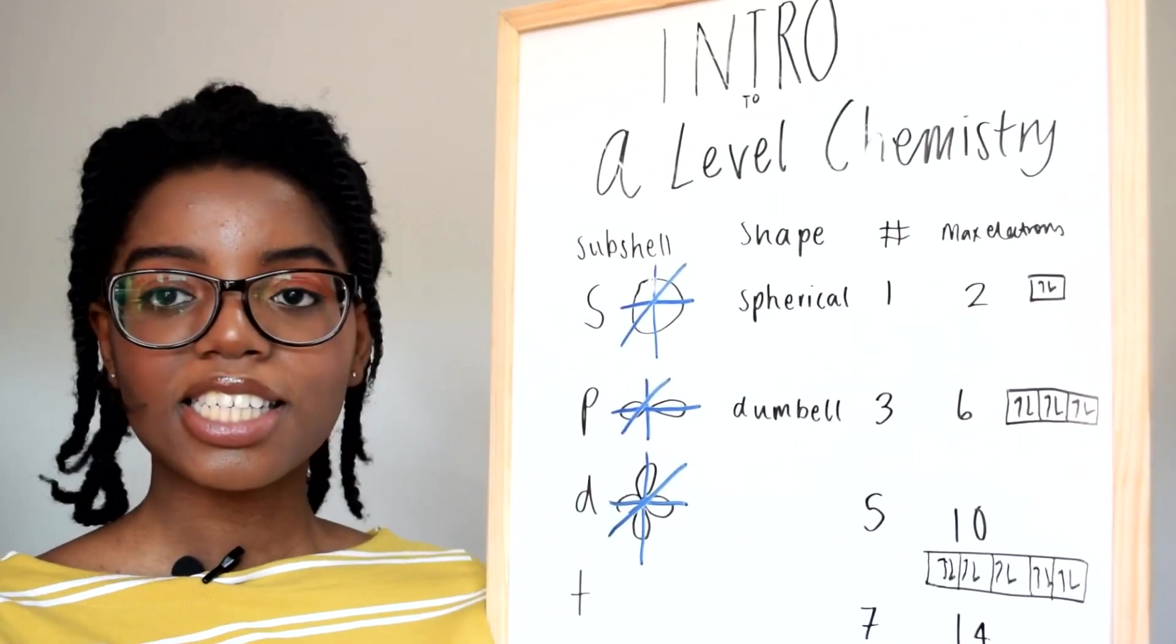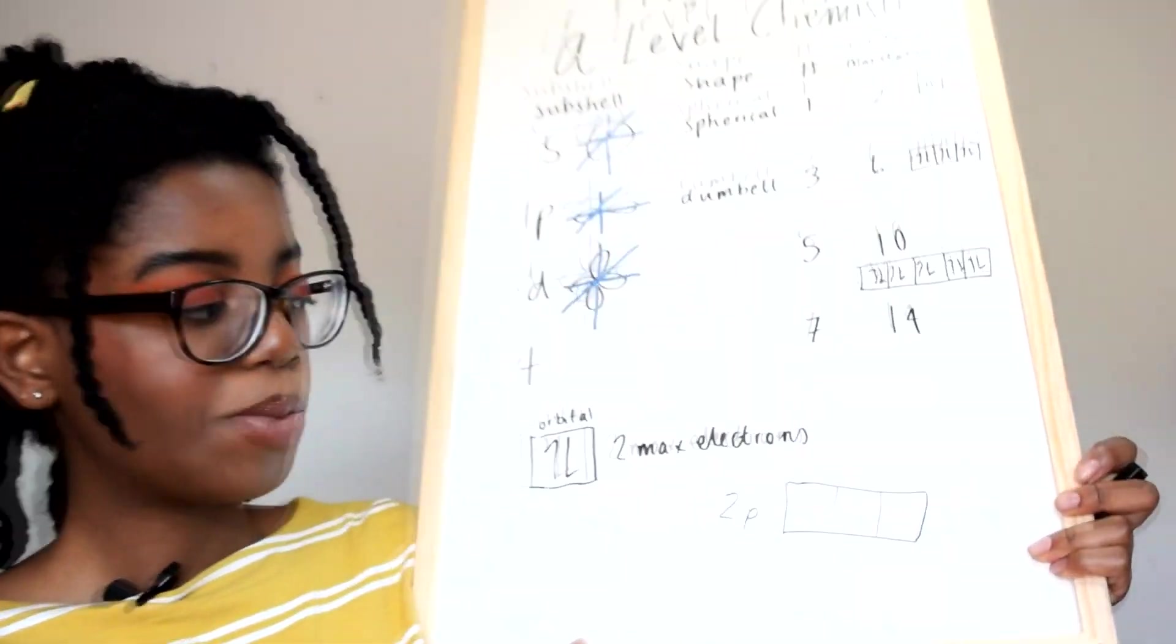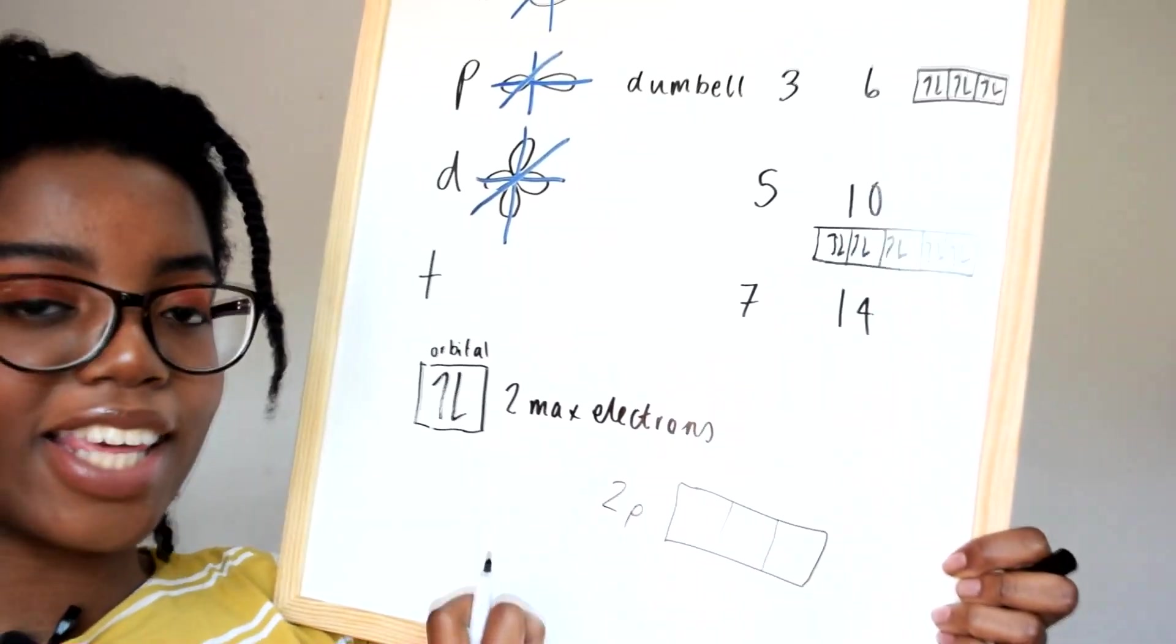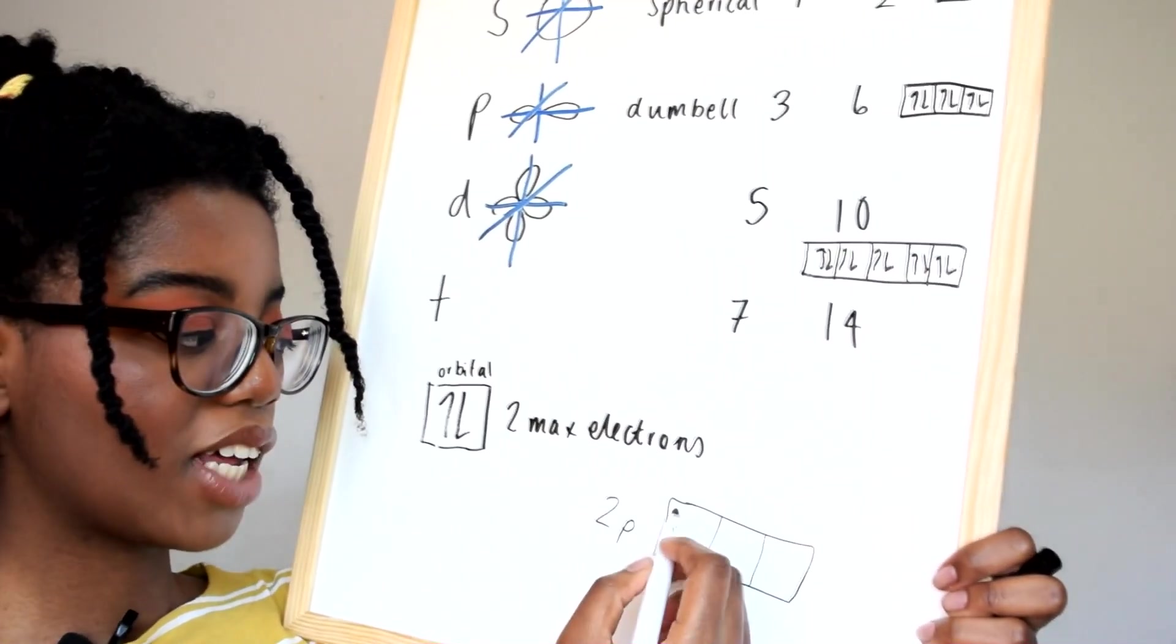This is depicted as these diagrams. To draw in the orbitals, because of the way the electrons repel, you must fill the electrons one at a time instead of as a pair.